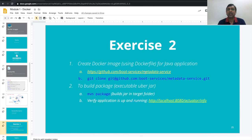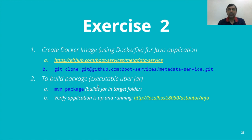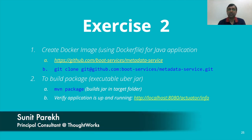Your exercise is to create a Docker image for a Java application available on GitHub — a Java Spring Boot metadata service. Clone the repository, then write your Dockerfile. In a Spring Boot application you build a fat executable JAR using mvn package, then execute it using java -jar and the JAR filename; the JAR is in the target folder. To verify, since it uses Spring Actuator, hit the actuator info URL. Please do the exercise and write your Dockerfile to build a Docker image for the Java application.